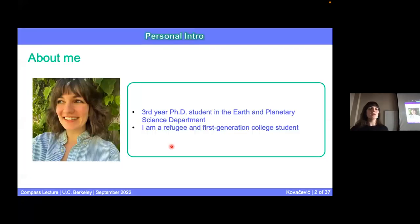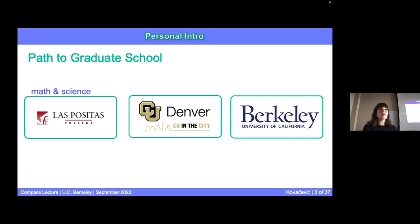So, I'm a third-year PhD student in the Earth and Planetary Science Department. A little bit of background on me is I'm a refugee and a first-generation college student. I came to America in 1998, so I pretty much grew up here, and I was the first one to attend community college in my family. So, before I begin the science-y part of my talk, I wanted to take you guys through kind of my path to what I do here in graduate school.